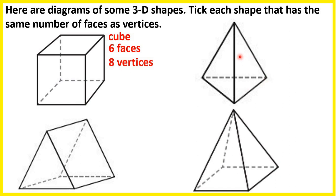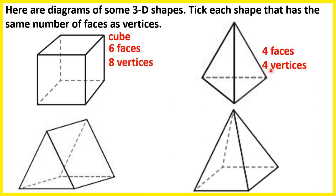Let's look at this shape. We have 4 faces — a triangle at the bottom and a face connecting each side of the triangle to the point at the top. And we have 4 vertices — 3 vertices at the bottom for the corners of the triangle and 1 vertex at the top. So here we do have the same number of faces and vertices — this is a triangular-based pyramid.